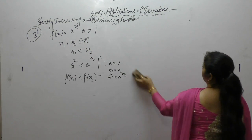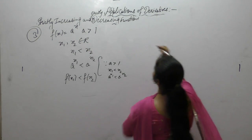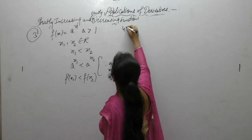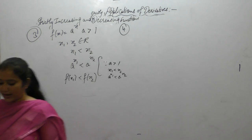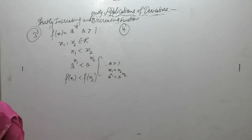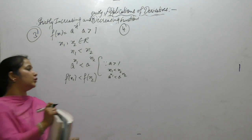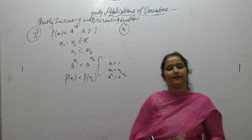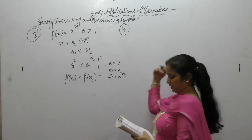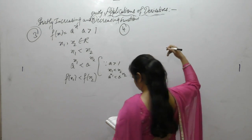For a strictly decreasing function: if x₁ < x₂, but the value of the function at x₁ is greater than the value of the function at x₂, i.e., f(x₁) > f(x₂), then the function is strictly decreasing.